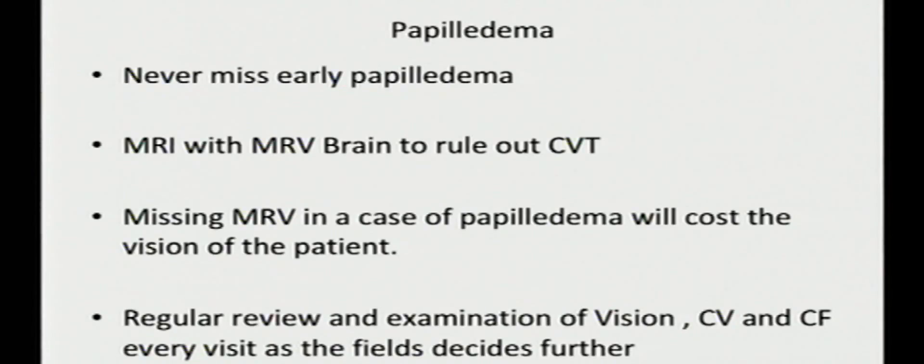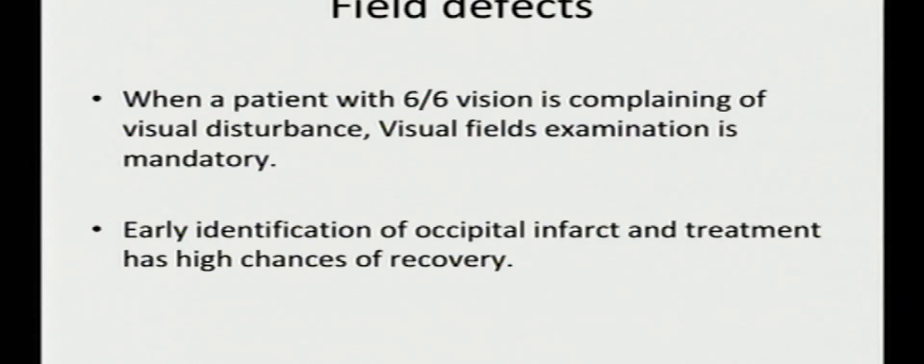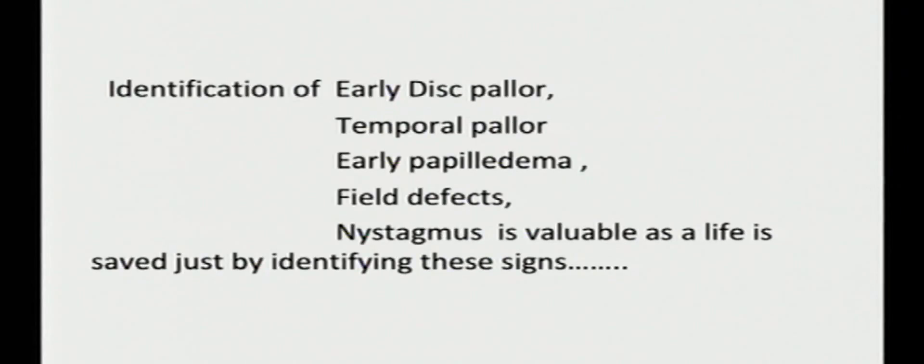To be noted, please never miss early papilledema. In CVT, to rule out CVT, MRI along with MR venogram is very much important. Regular review and examination of the vision, color vision and fields every visit has to be done in all papilledema cases as the fields will decide the further management, whether the patient has to go in for a VP shunt or optic nerve sheath decompression. Field defect: whenever a patient with 6/6 vision is complaining of visual disturbance, fields examination is mandatory. Early identification of occipital infarct and treatment has high chances of recovery. Identification of early disc pallor, temporal pallor, early papilledema, field defects and nystagmus is valuable. We ophthalmologists are not just sight savers, we are also life savers if we don't miss all these signs. Thank you.